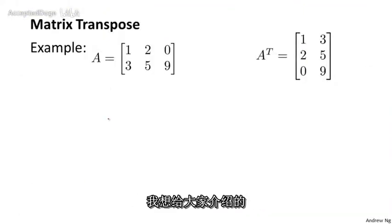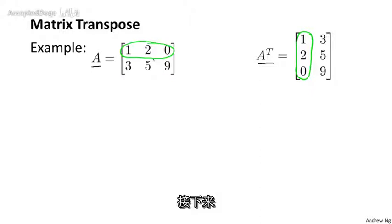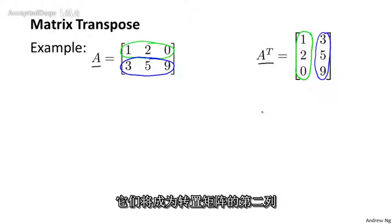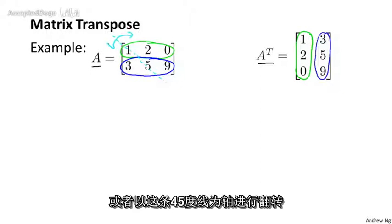Finally, the last special matrix operation I want to tell you about is the matrix transpose. So suppose I have a matrix A. If I compute the transpose of A, that's what I get here on the right. This is A transpose, which is written A superscript T. And the way you compute the transpose of a matrix is as follows. To get the transpose, I'm going to first take the first row of A, [1, 2, 0], and that becomes the first column of the transpose. And then I'm going to take the second row of A, [3, 5, 9], and that becomes the second column of the matrix A transpose. And another way of thinking about how to compute the transpose is as if you're taking this 45 degree axis and you're mirroring or flipping the matrix along that 45 degree axis.